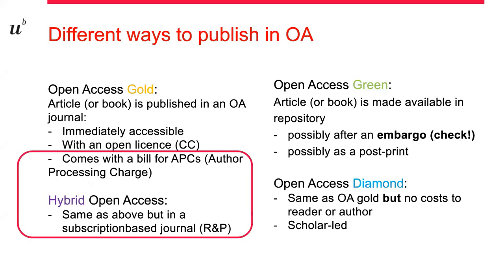There are different roads to open access publishing. The green road means that you make your publication available in a repository such as Boris at the University of Bern. This road is most important if you publish your article in a subscription journal and you need to meet funders' or institutions' requirements of open access publishing. Please always check embargo policies of the journals before you choose this road.